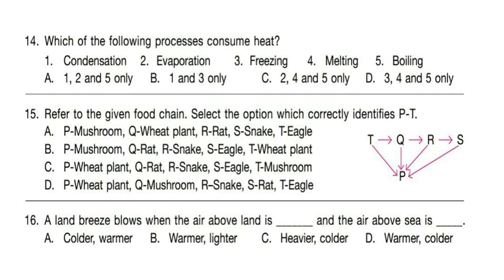Question 15: Refer to the given food chain. Select the option which correctly identifies P to T — P, Q, R, S, T. Think about your answer. Correct answer is option B. P is mushroom, Q is rat, R is snake, S is eagle, and T is wheat plant.